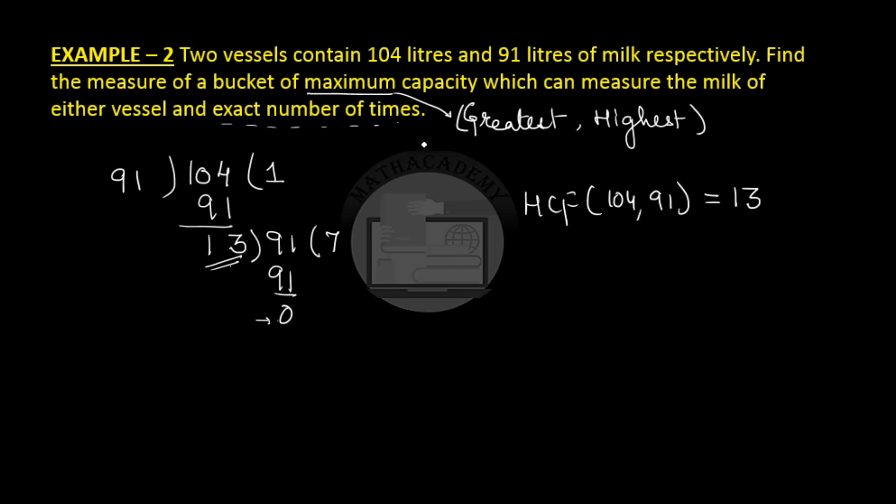So what do we see? If we see that if we have the measure of bucket which is 13 liters then I can fill that bucket 8 times to fill the vessel of 104 liters and we can fill the bucket 7 times to fill the vessel that consists of 91 liters of milk. So I hope this question is clear to everyone.